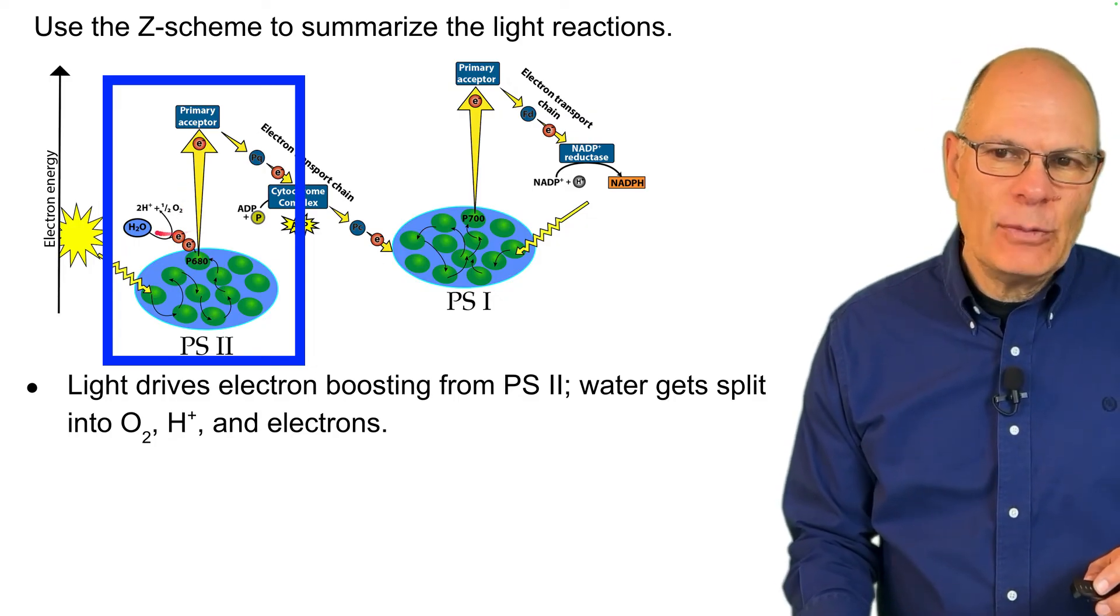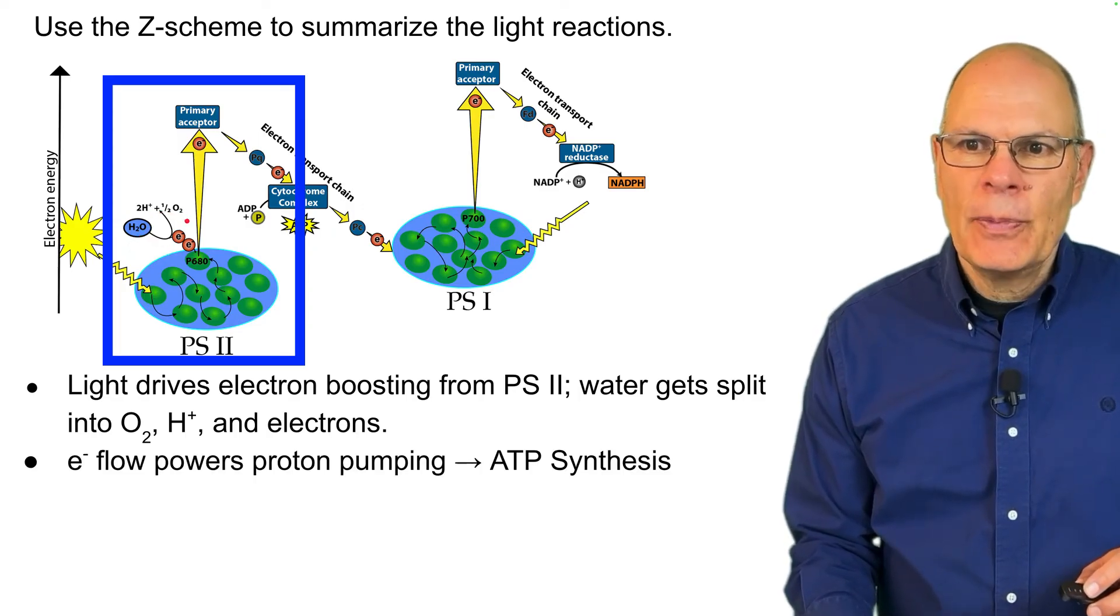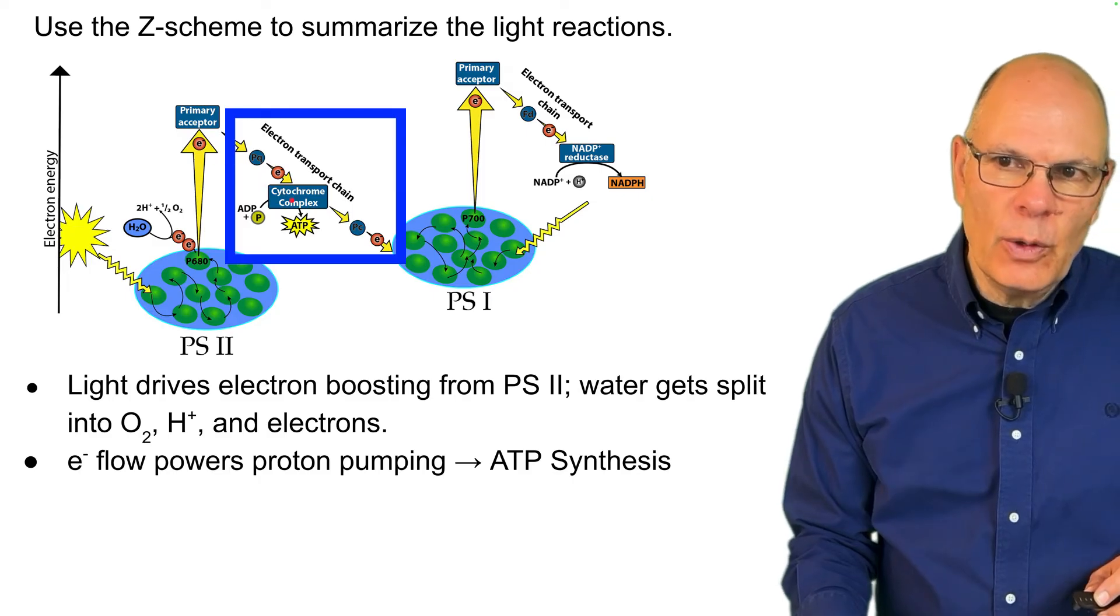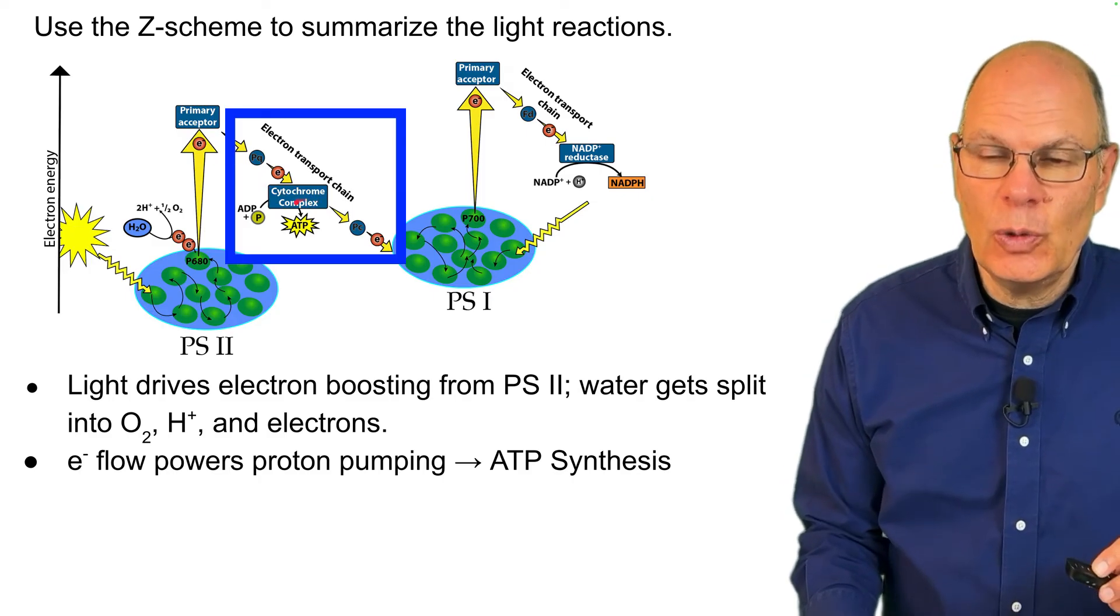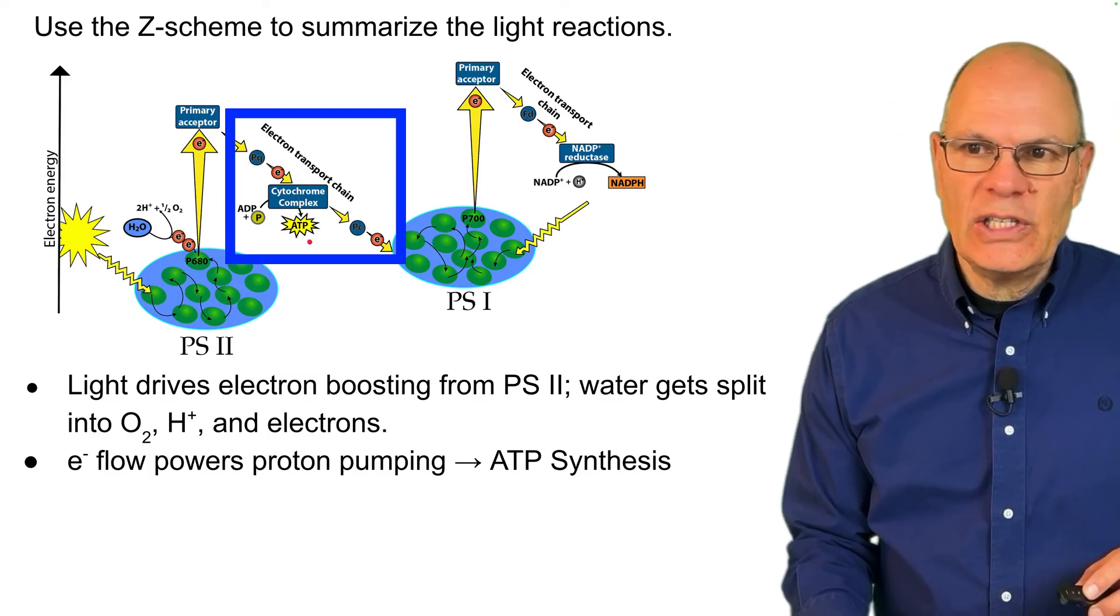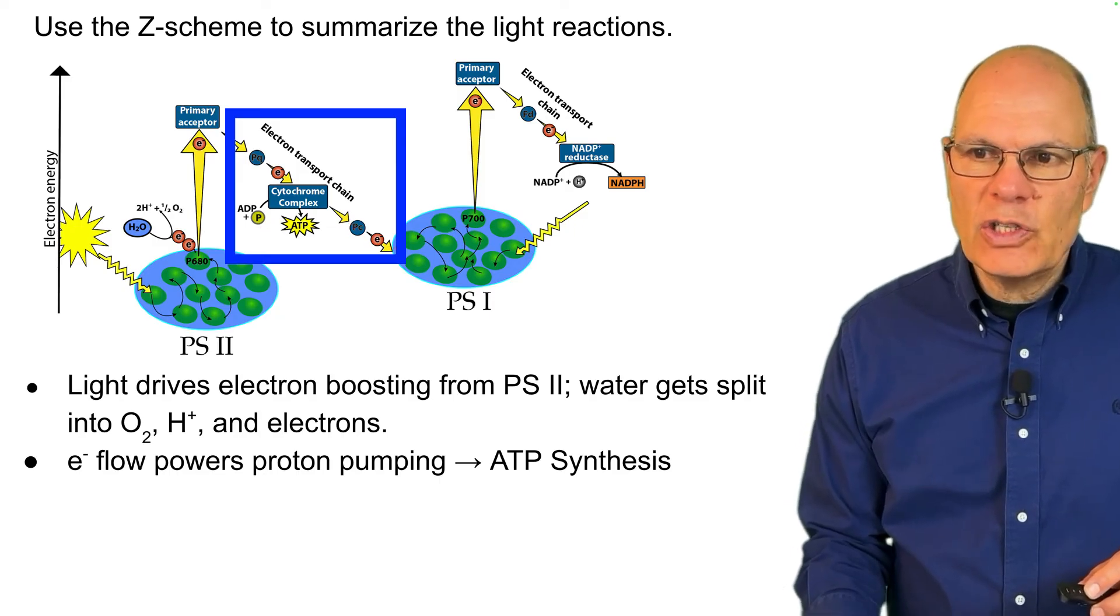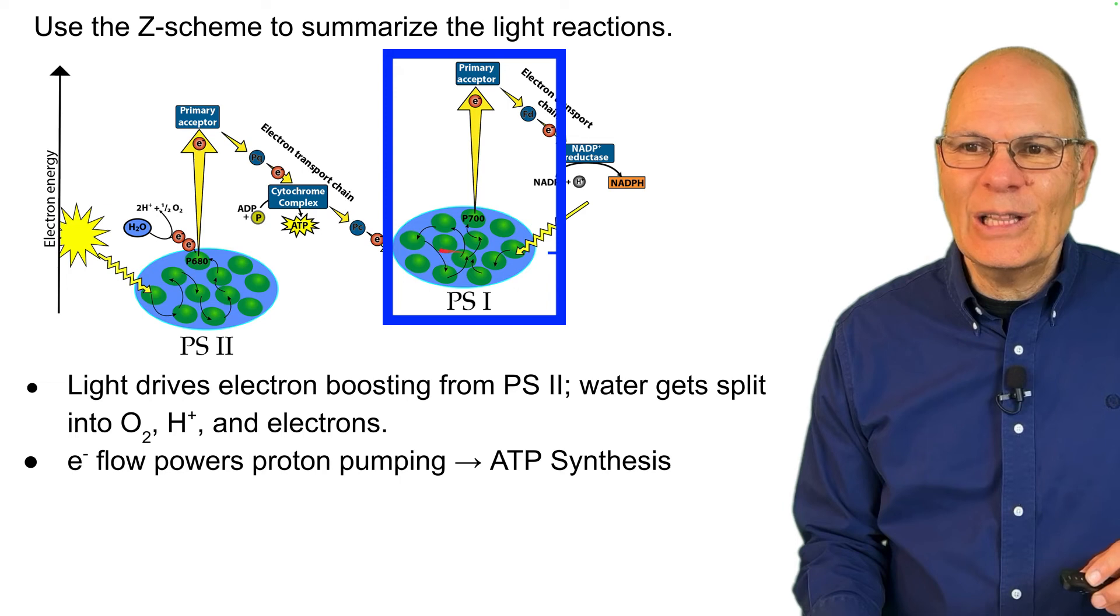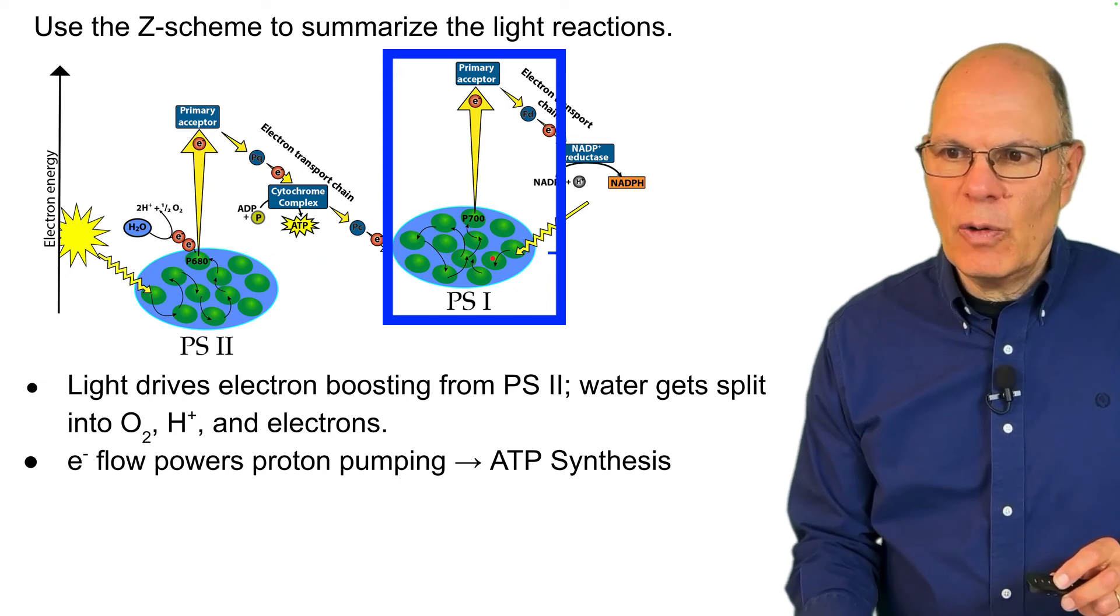Then there's electron flow through the electron transport chain of photosystem II. And that goes through proton pumps that power the synthesis of ATP from ADP and phosphate. Those electrons arrive at photosystem I. They're relatively low energy at this point. You can see that by their position on the graph.